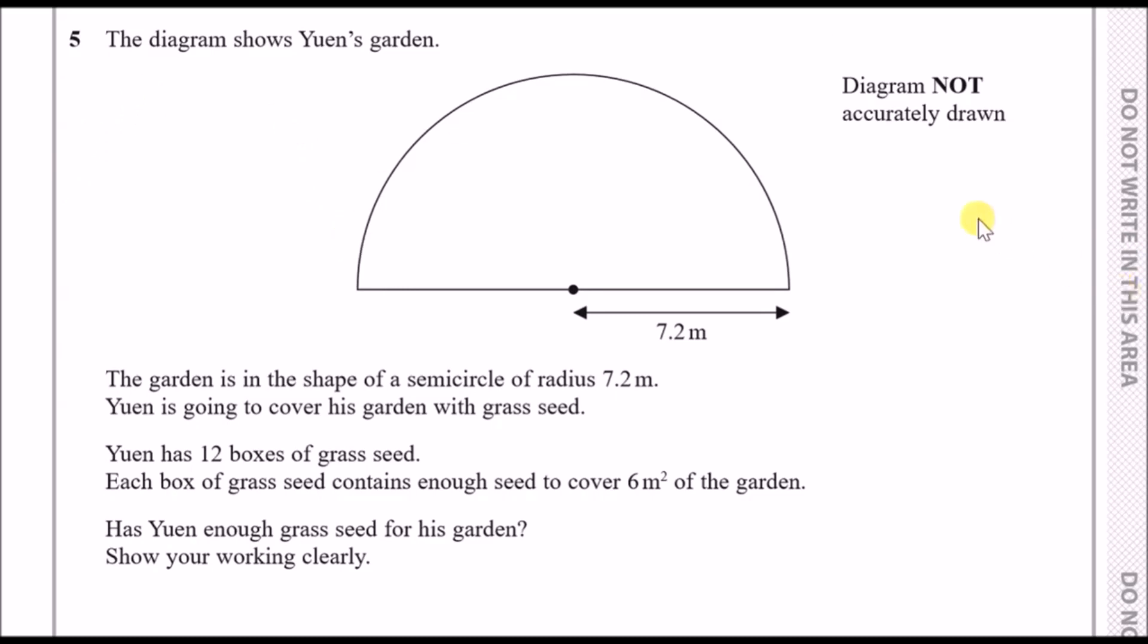For these kind of questions the most important element is to always find out firstly how big the garden is, the area of the garden. Because we know it's a semicircle this is essentially half the area of a circle. The area of a circle is pi r squared. Because we're dealing with half the circle we're going to divide the result by two.